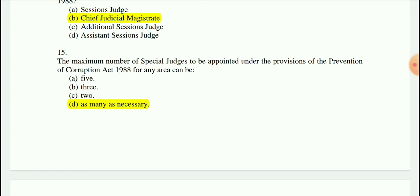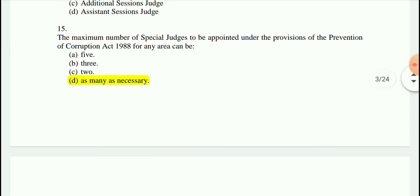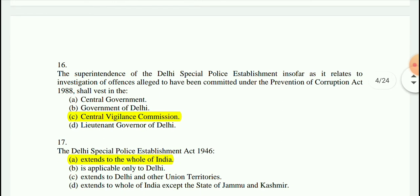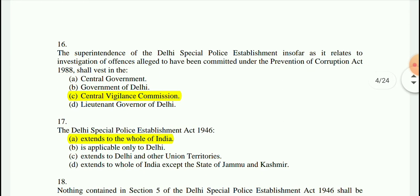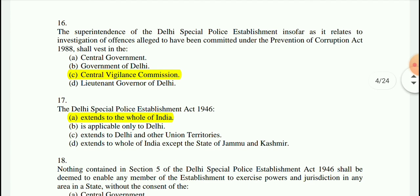Question 15: The maximum number of special judges to be appointed under the Prevention of Corruption Act 1988 for an area can be as many as necessary — no specific number is specified. Question 16: The superintendence of DSPE, insofar as it relates to the investigation of offenses alleged to have been committed under the Prevention of Corruption Act, shall vest in the Central Vigilance Commission.